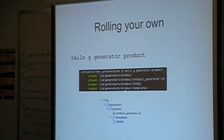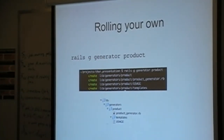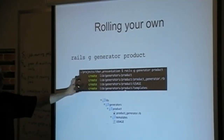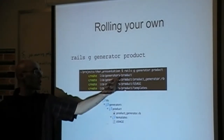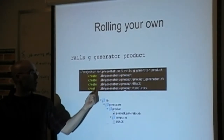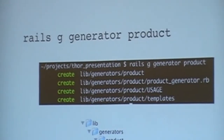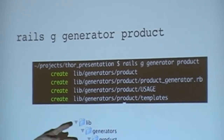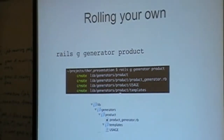Rails 3 has added a nice feature — a generator generator. You just give it the name of the generator you want, and what you get is two directories. This is the name of the generator — 'product.' It creates the product generator, a usage file which is a default help file, and a directory called templates which we'll talk about later. This is what you get in your Rails project when you run this.